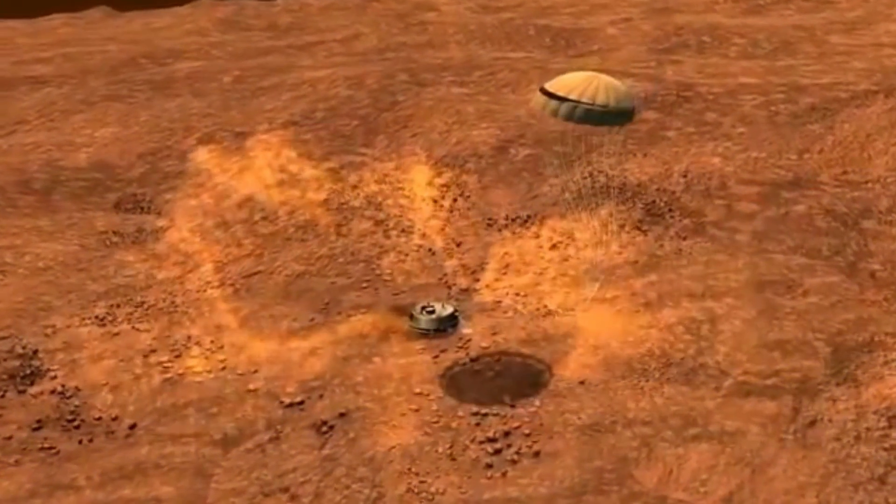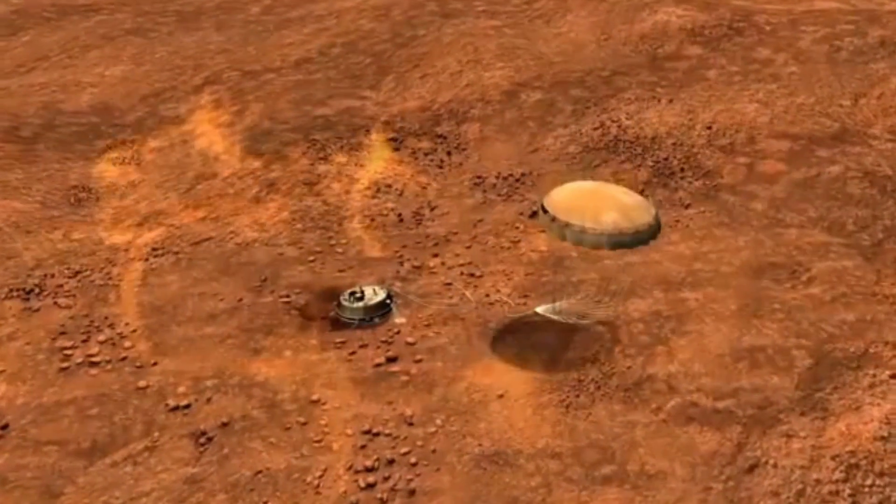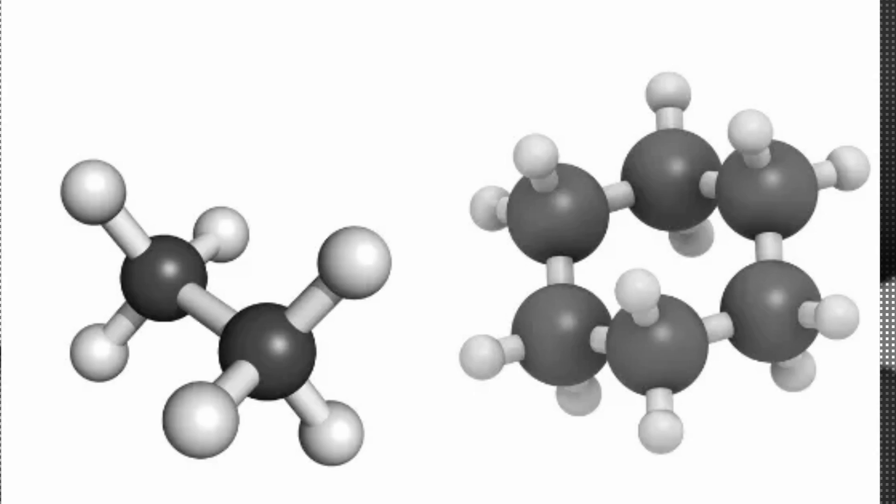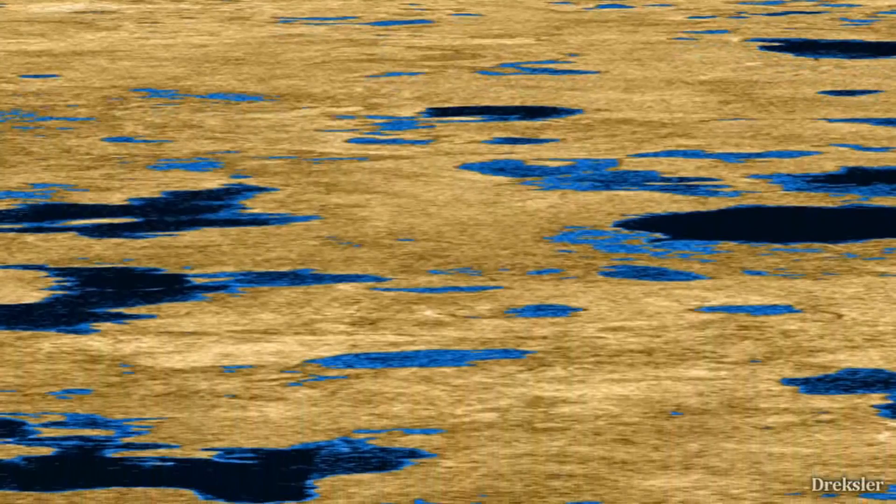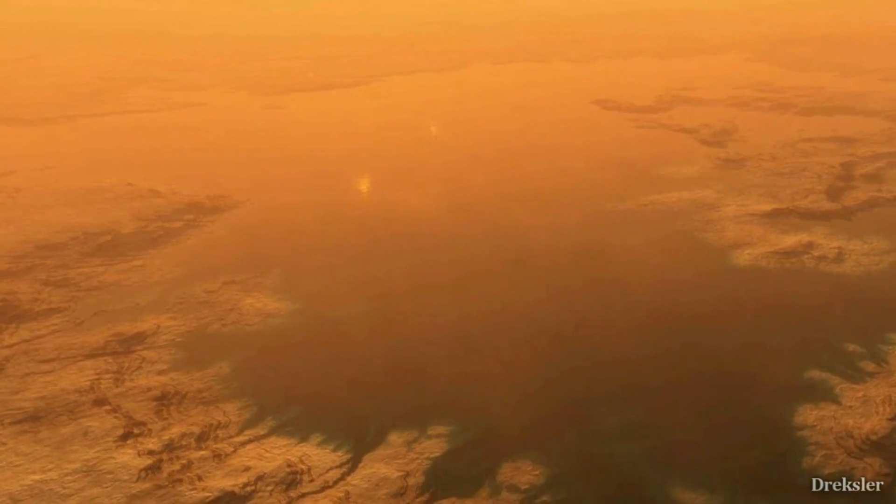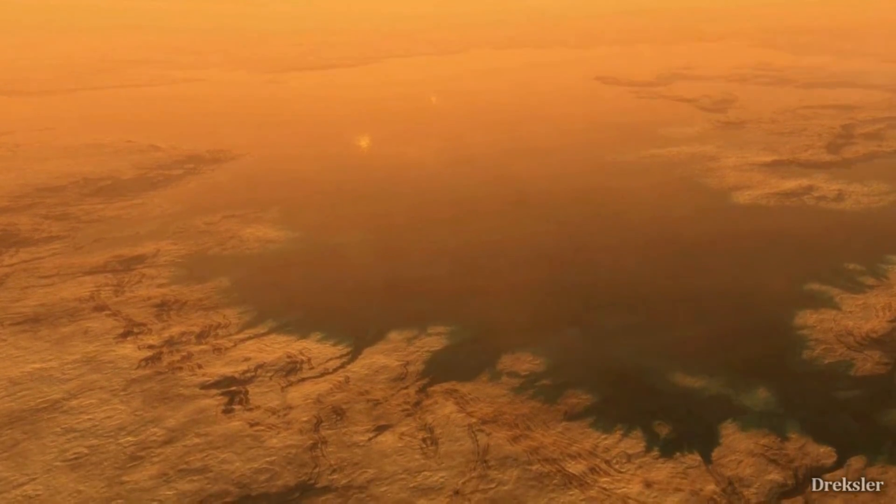During the Huygens probe's landing, it was discovered that Titan's surface is covered in a thick layer of organic molecules, primarily hydrocarbons. Titan's unique weather cycle is based on these molecules, in which liquid methane and ethane rain from the atmosphere, eroding the landscape and carving out river channels that eventually flow into vast lakes and seas of liquid methane and ethane.